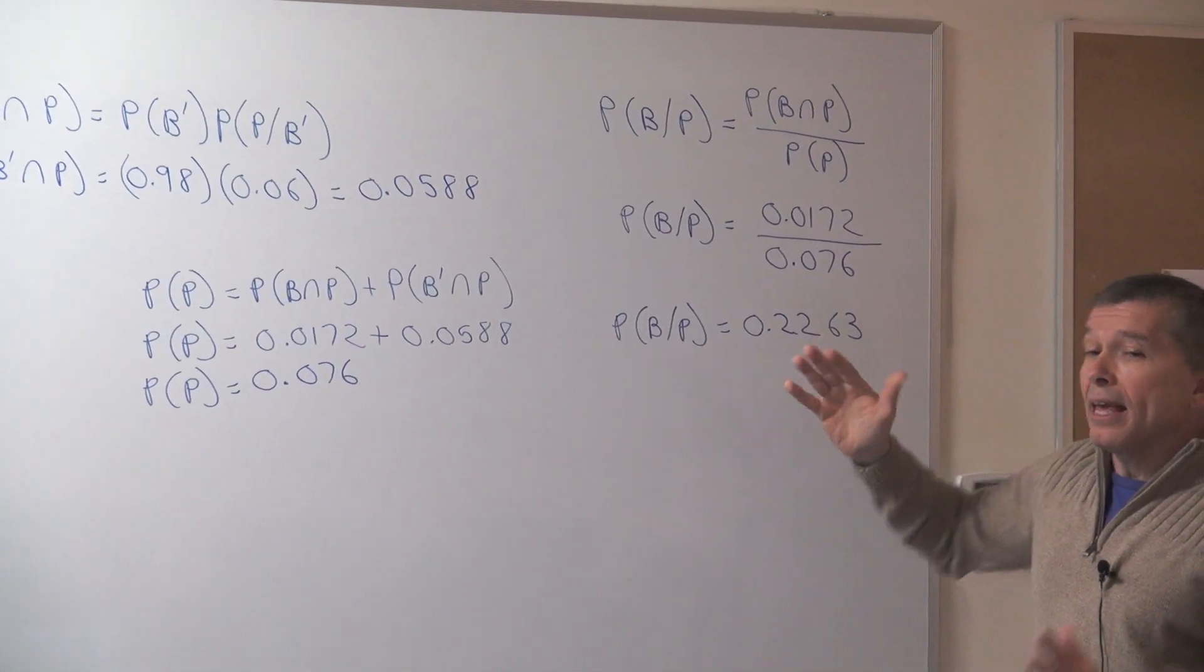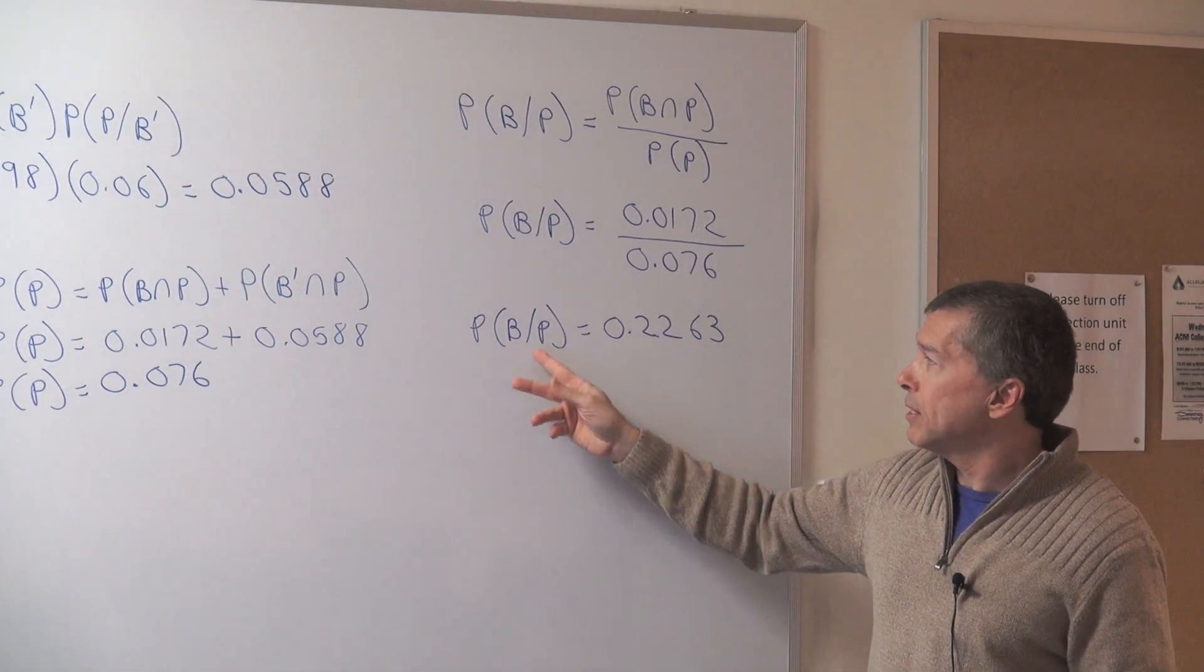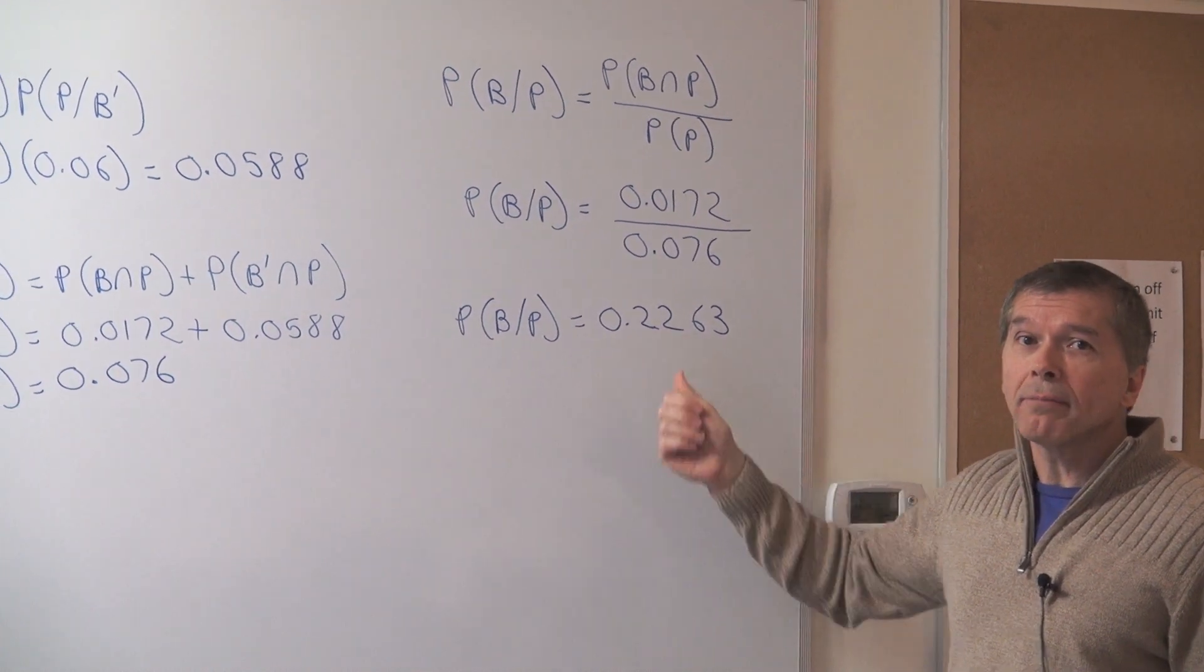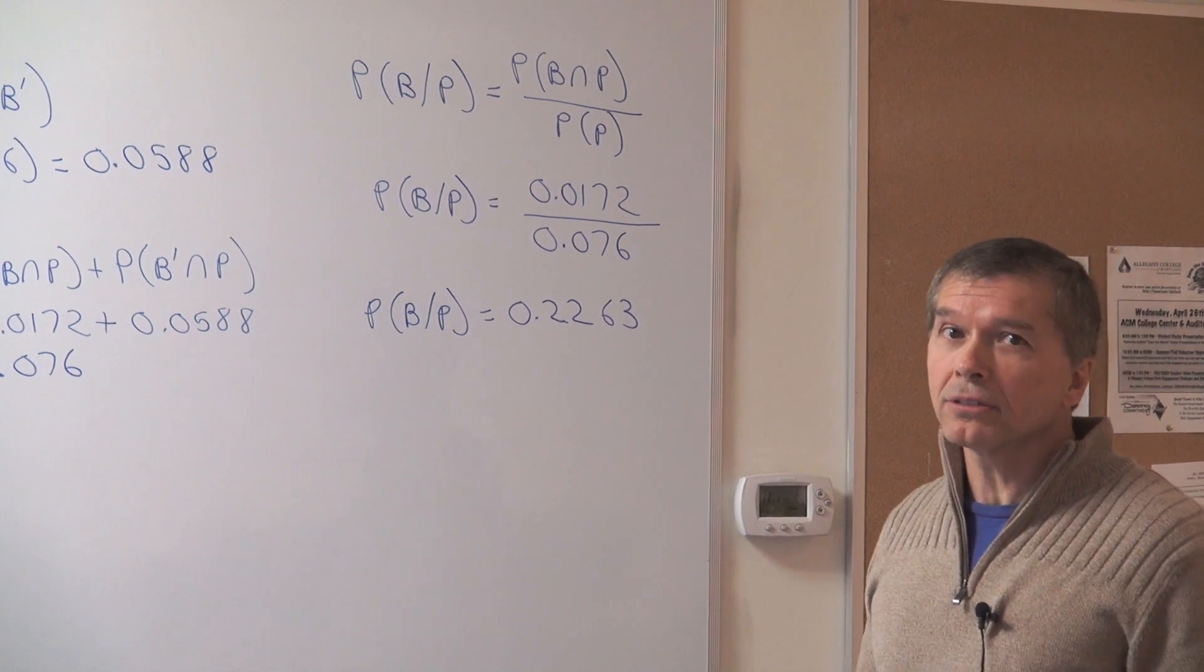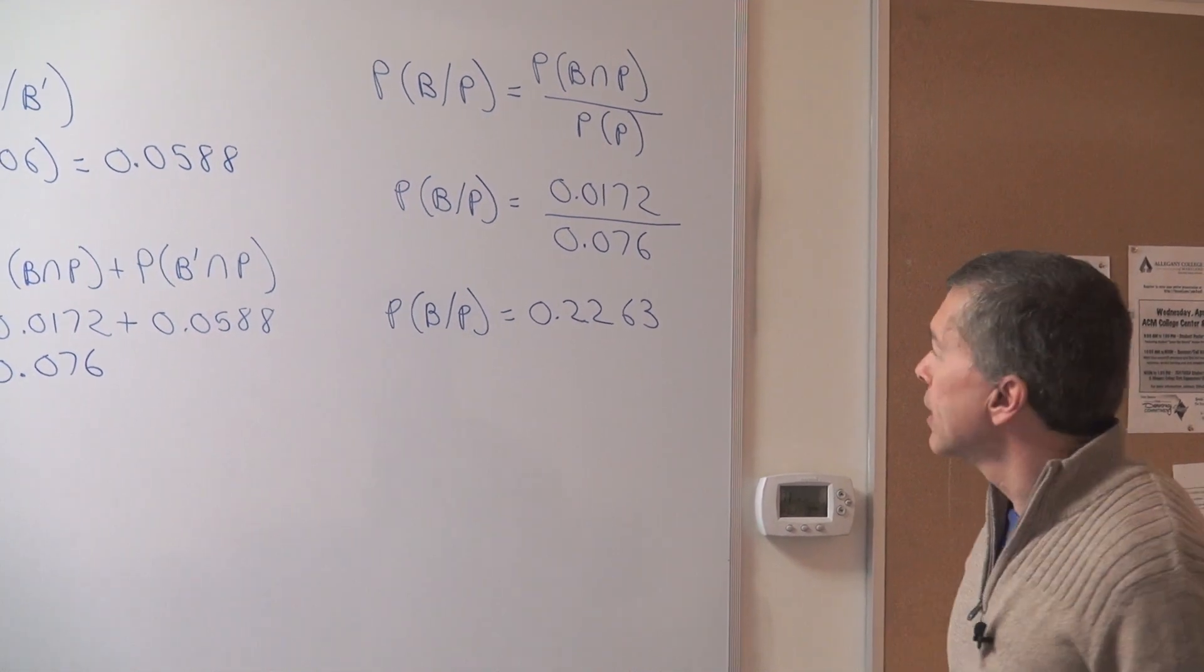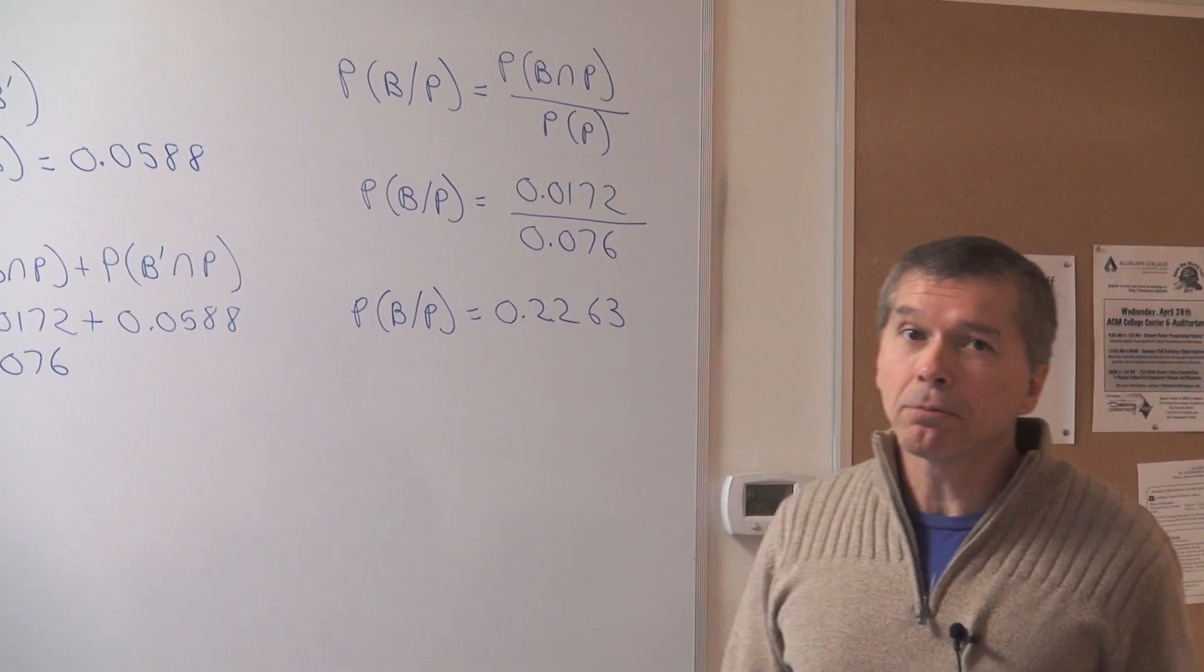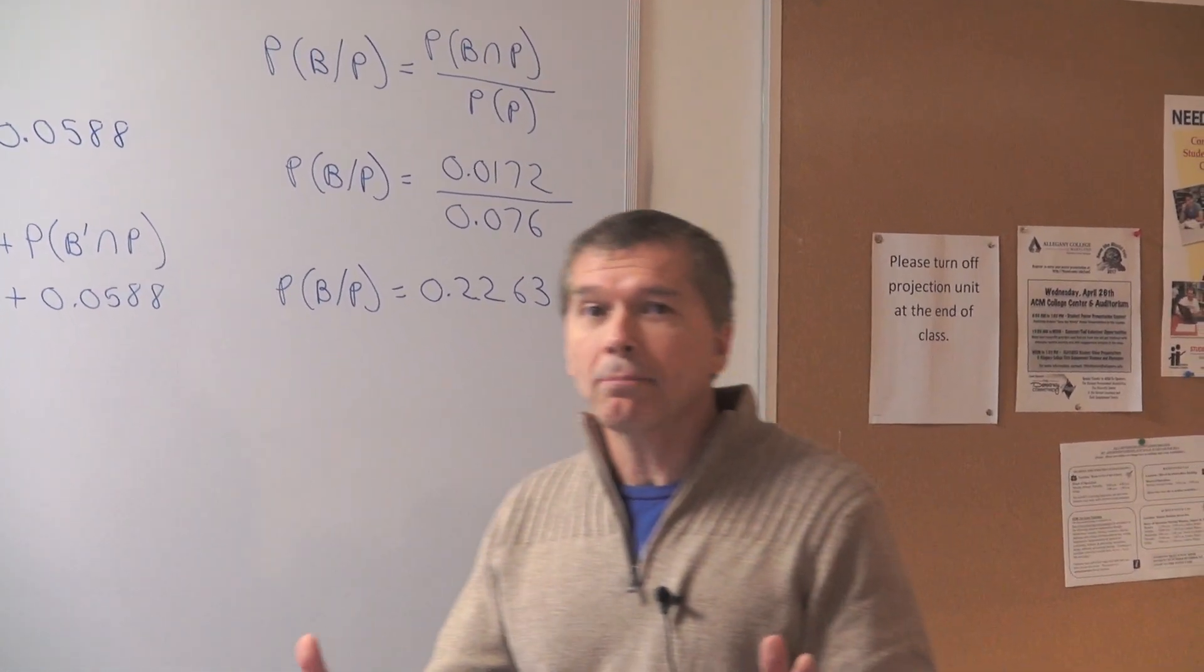So the probability, and this is actually true in real life, the probability that a woman has breast cancer given that she had a positive result on a mammogram, it's even less than 22%. It's really like about only an 8% chance that that happens. And a lot of people including doctors think it's a 50-50 chance. It isn't. It's clear down to really in real life like about an 8% chance. But on this problem that's what it is right there. And that should help you with that problem.